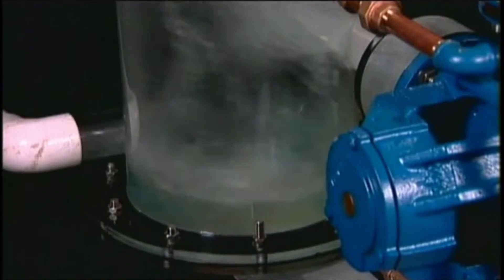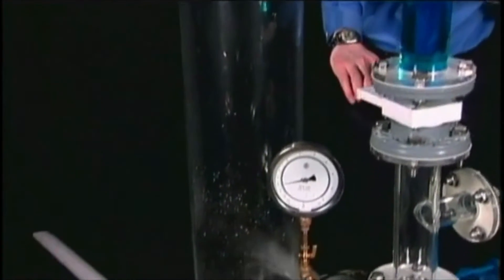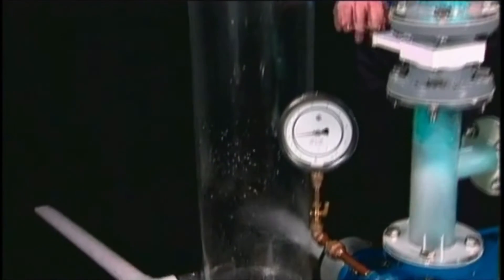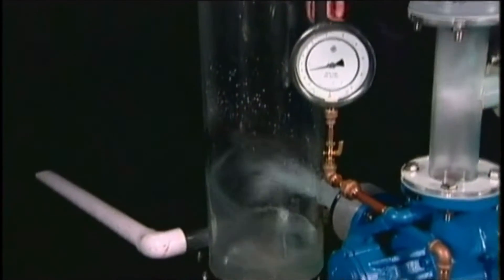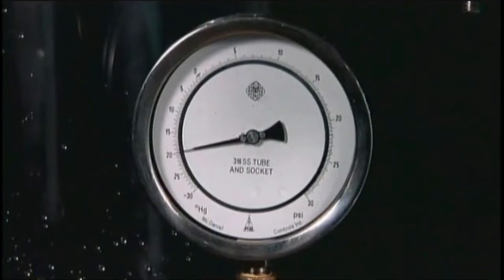That could have destroyed some pumps, but liquid is a natural element in a Nash pump. The slug passed right through and the vacuum was barely affected and just for a split second.